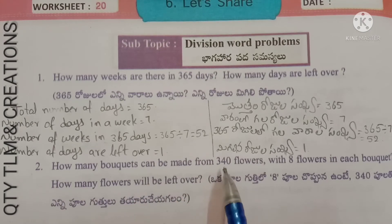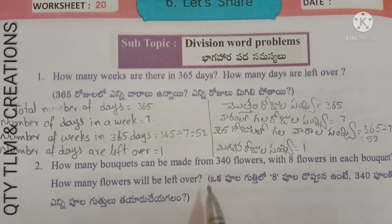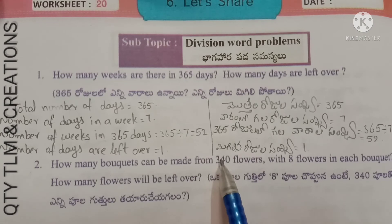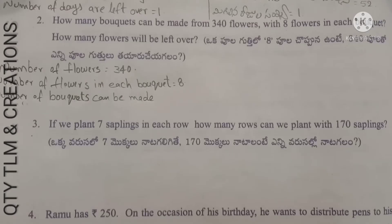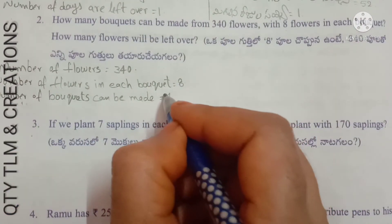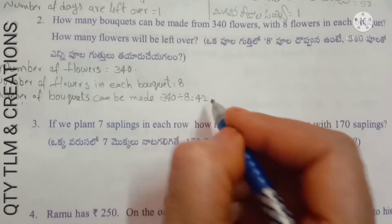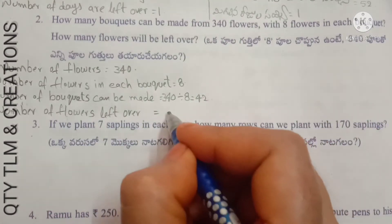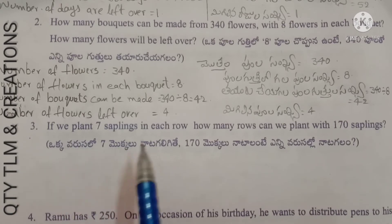Next question: how many bouquets can be made from 340 flowers with 8 flowers in each bouquet, and how many flowers will be left over? Total flowers = 340. Flowers per bouquet = 8. Number of bouquets = 340 divided by 8 = 42 bouquets. Number of flowers left over = 4 flowers.